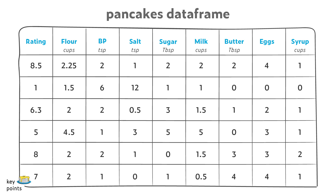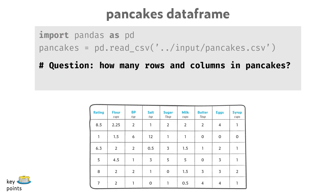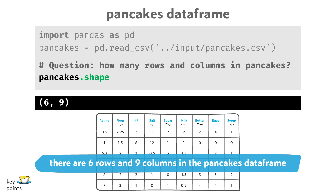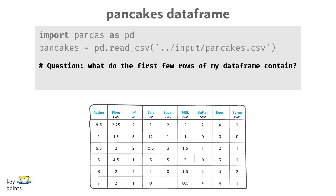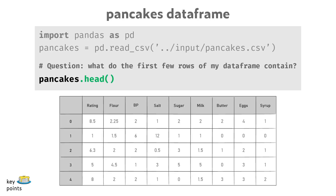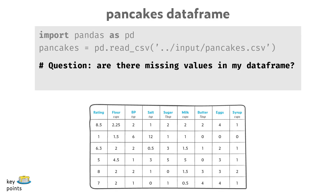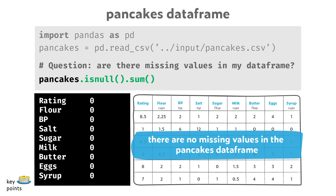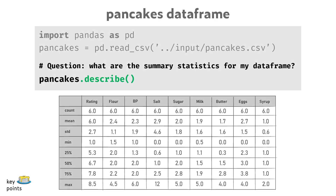Let's try answering some of these questions on our pancake data set using the pandas library. For example, if we want to know how many observations and variables — or rows and columns — are in our data frame, we can use pancakes.shape. To look at the names of the variables, we can run pancakes.columns. To look at the first few rows, we can use pancakes.head(). To explore missing data, we can run pancakes.isnull().sum(). We can also get a table with summary values by using pancakes.describe().